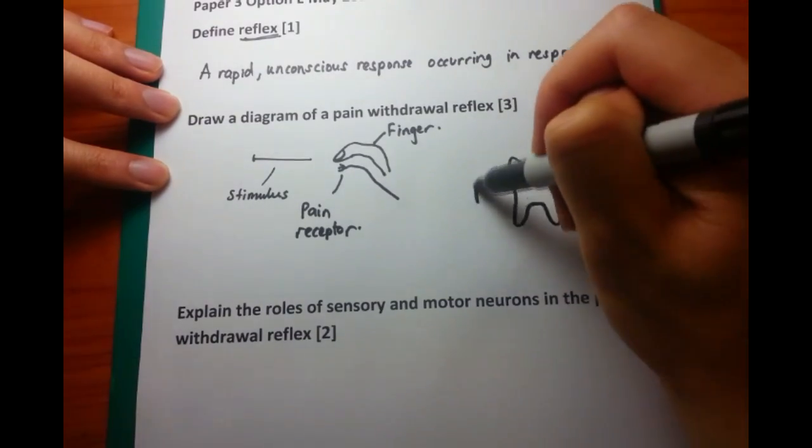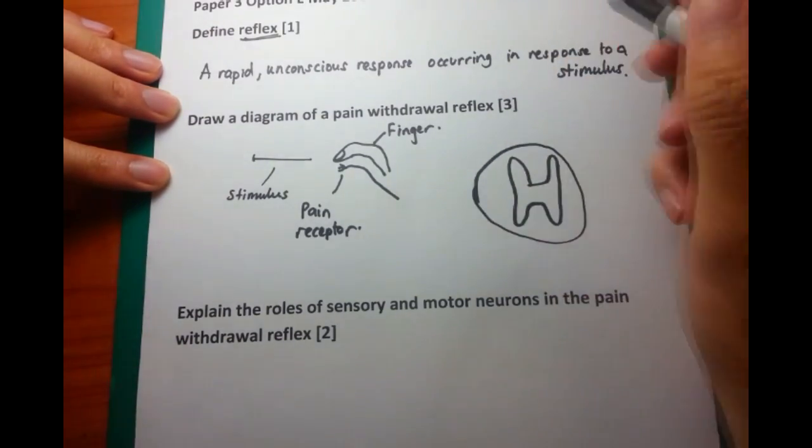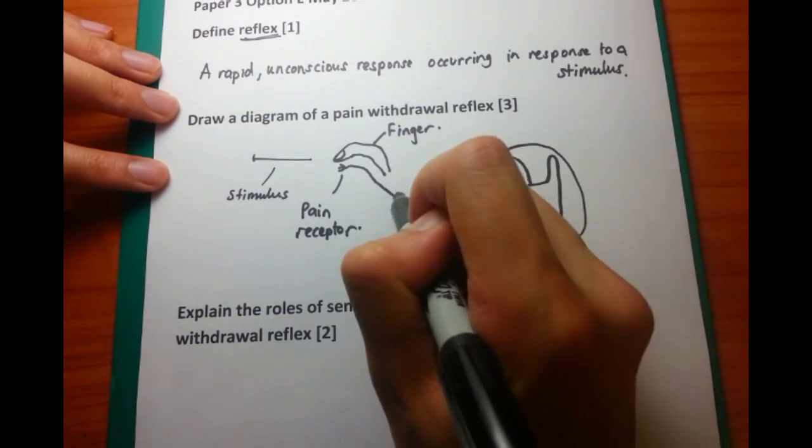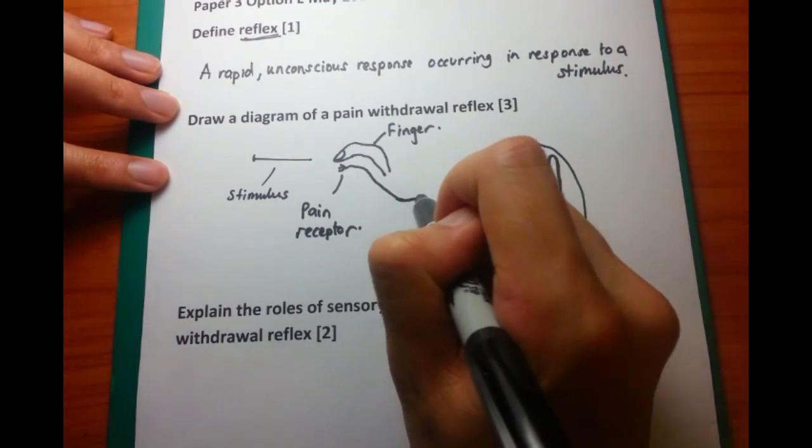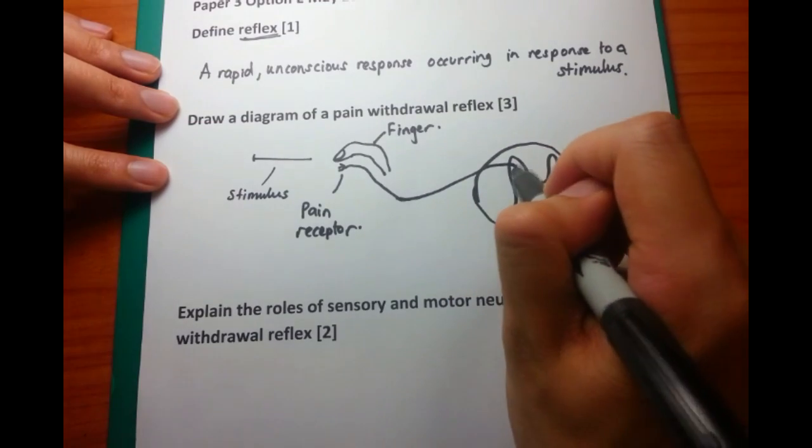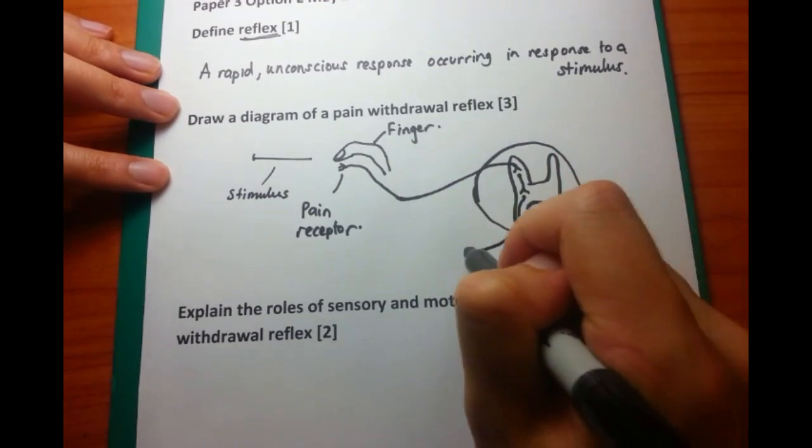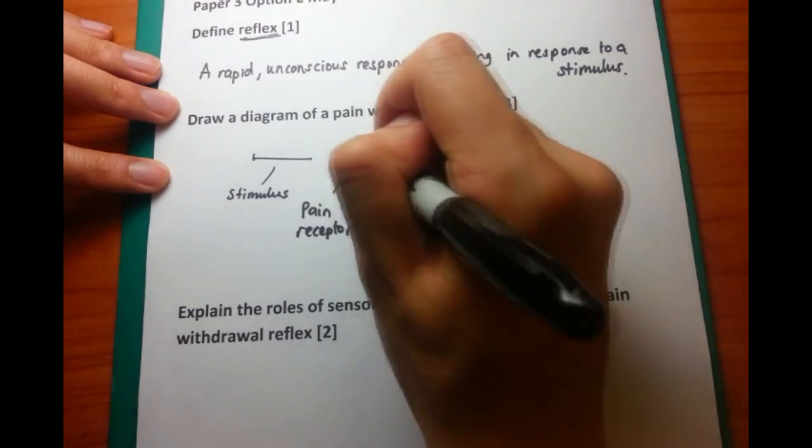And this is not something that you need to know, but it actually synapses or connects in the dorsal column of the spinal cord. And as we draw this along here, as we're being patient, what it synapses to within the grey matter of the spinal cord is a relay neuron.